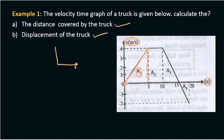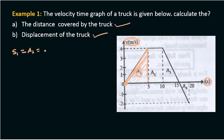The distance is equal to area 1. Area 1 is equal to one-half times base times height — that is one-half times 4 times 5, which equals 10 meters.